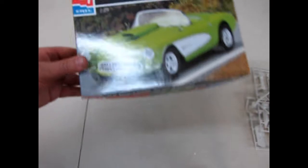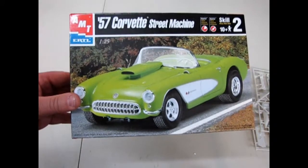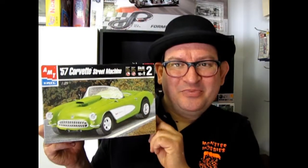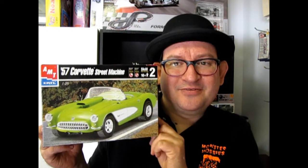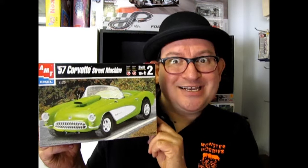And that brings us to the end of our review of the 57 Corvette Street Machine. Well, my little Earth Angels, I hope you enjoyed that episode of Monster Hobbies What's in the Box where we looked at the 57 Chevrolet Corvette Street Machine.